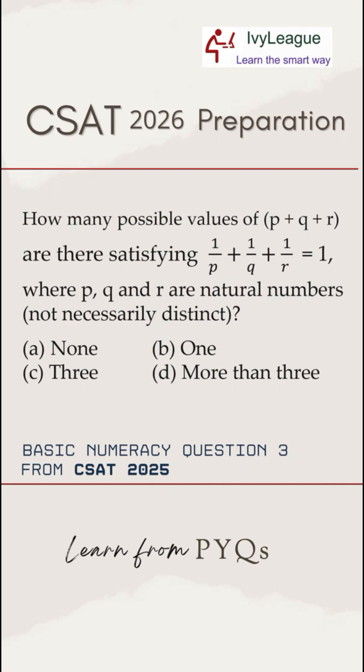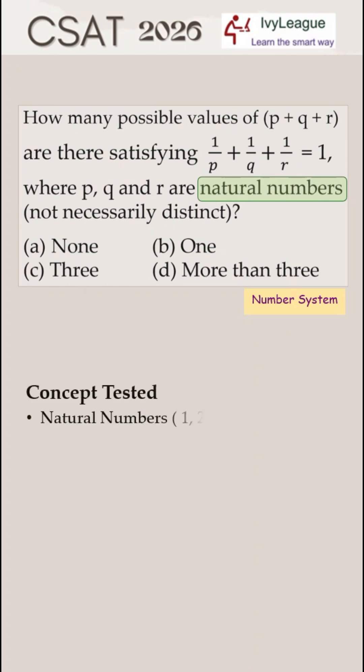Let's understand the limitations in this question. P, Q and R are natural numbers. This means P, Q and R cannot have zero or negative values. They also cannot be proper, improper or mixed fractions.